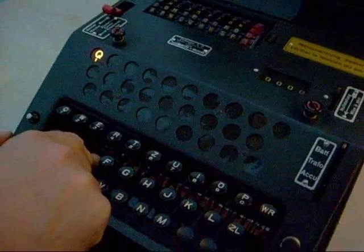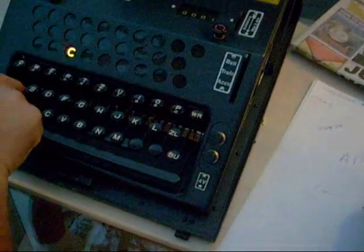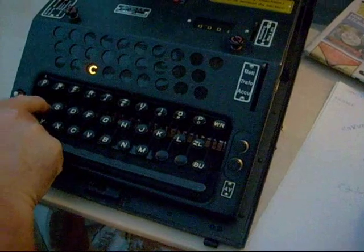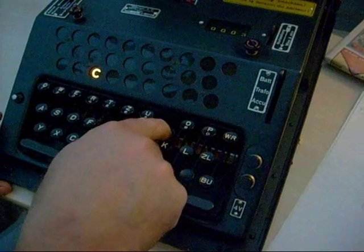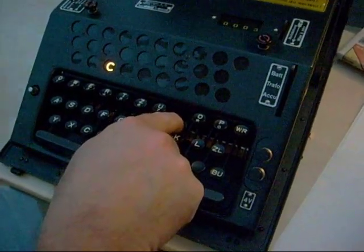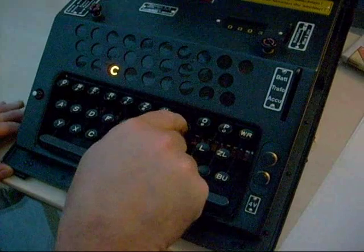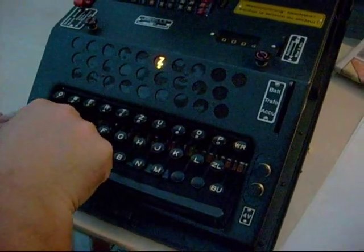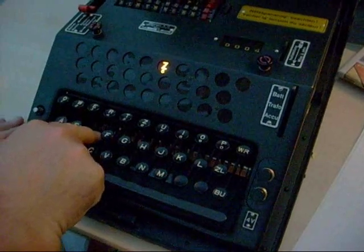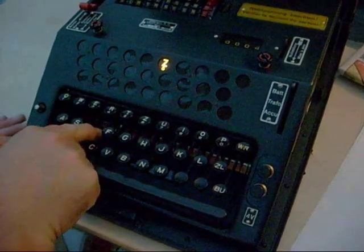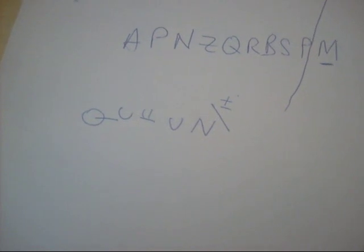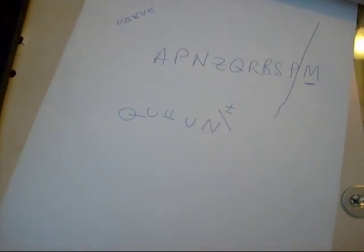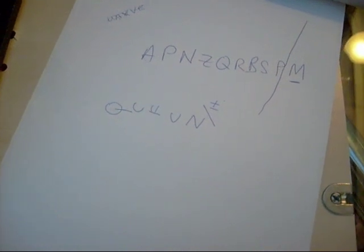We're now ready to type a message, which in this case will be 'David', which comes up as D — so we need to write down Q. A comes up as C, V comes up as F, I comes up as C. We had C already for A, so that's interesting, and D is the last letter, which is Z. And in fact we're going to do David DD, just to show that when you type D again it comes up with another letter, H. So that's the message we've transmitted: Q, C, F, C, Z, H.